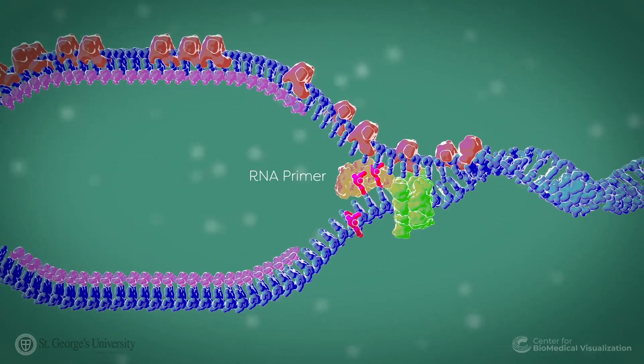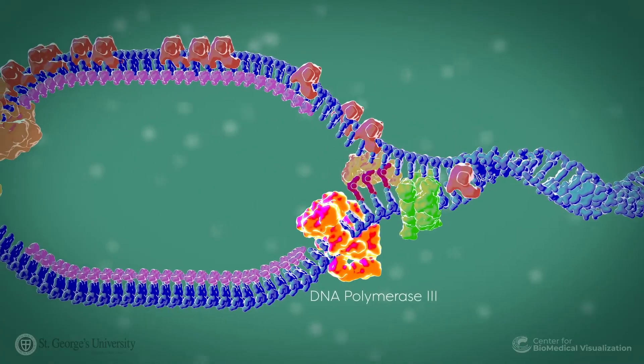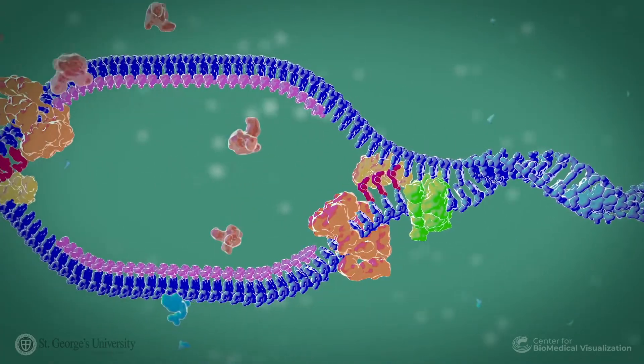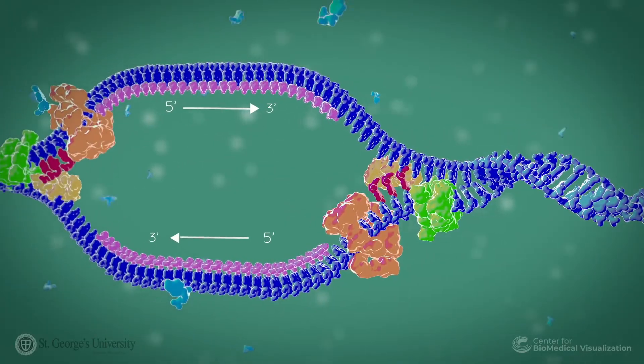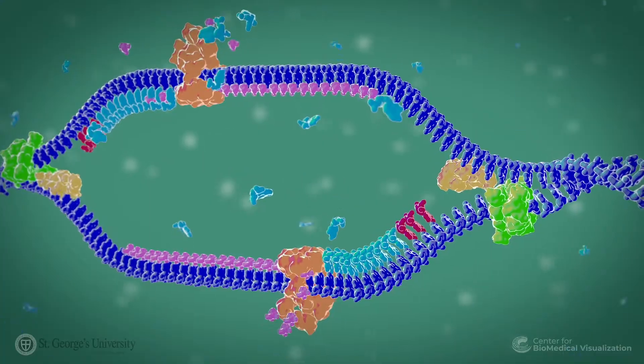As the DNA is unwinding, primase lays down an RNA primer that facilitates DNA polymerase 3 to synthesize DNA on the leading strand in the 5' to 3' direction.